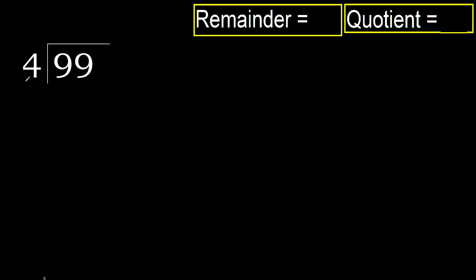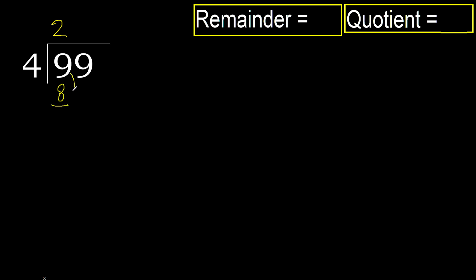99 divided by 4. 9 is not less; with 9, 4 multiplied by which number is nearest to 9 but not greater? 4 multiplied by 3 is 12 — 12 is greater. 4 multiplied by 2 is 8 — 8 is not greater. 9 minus 8 is 1.